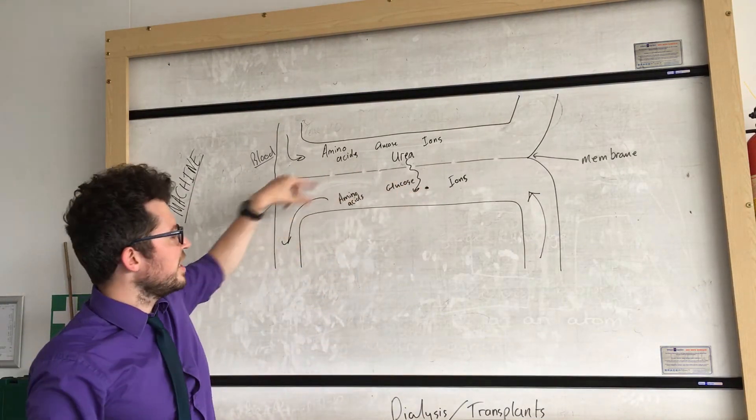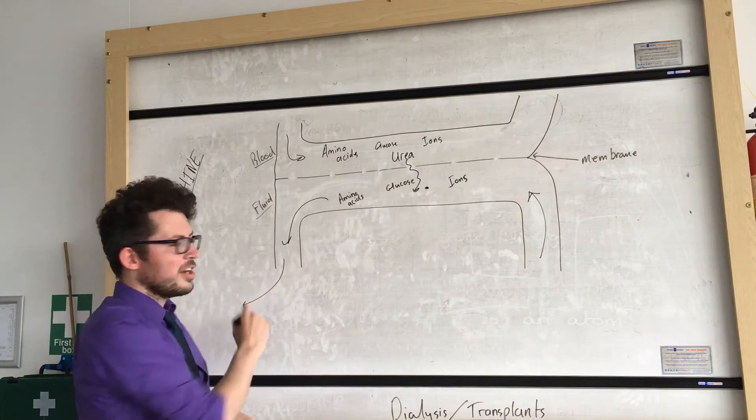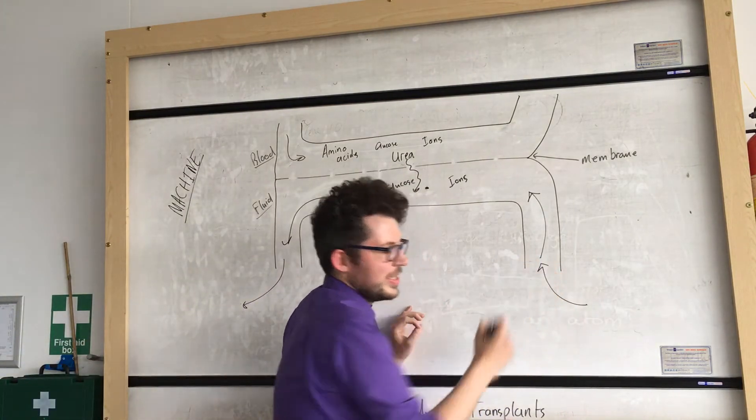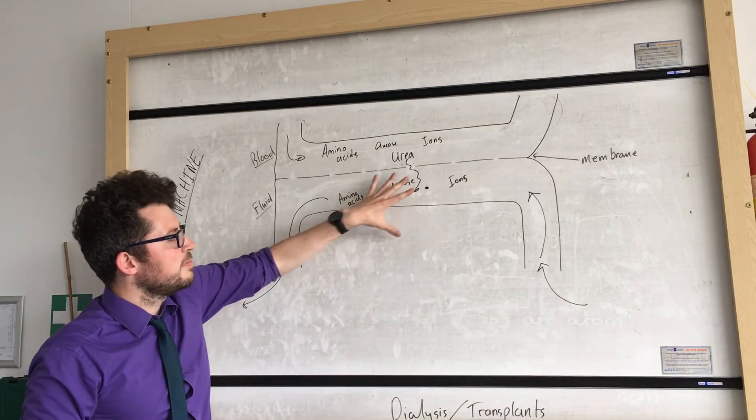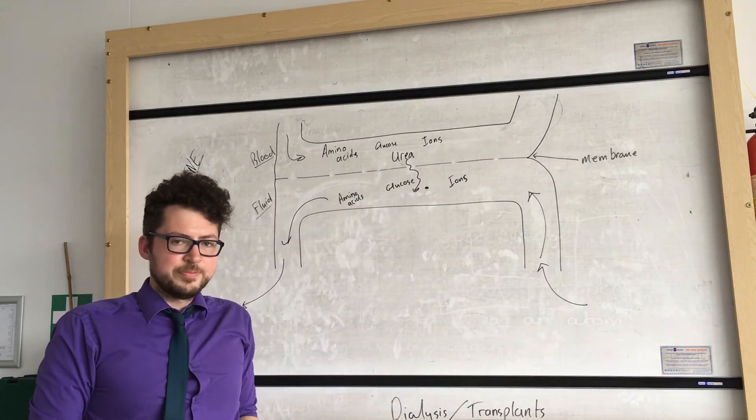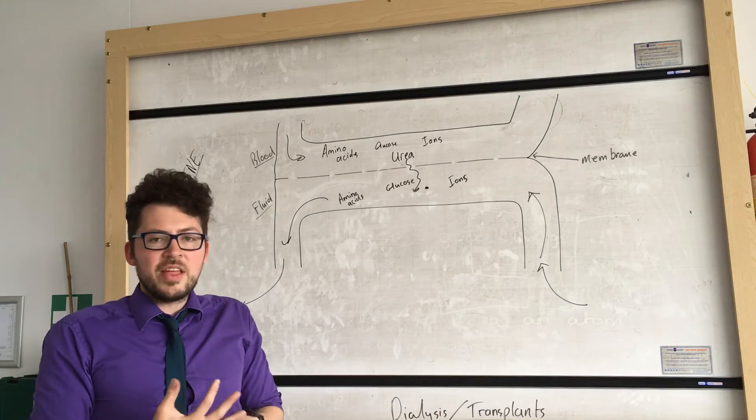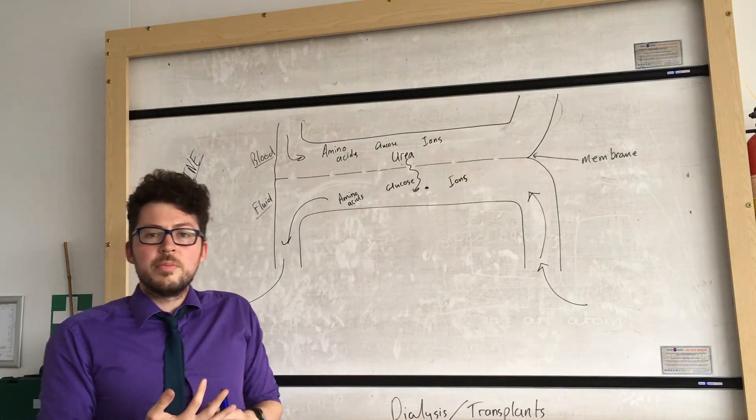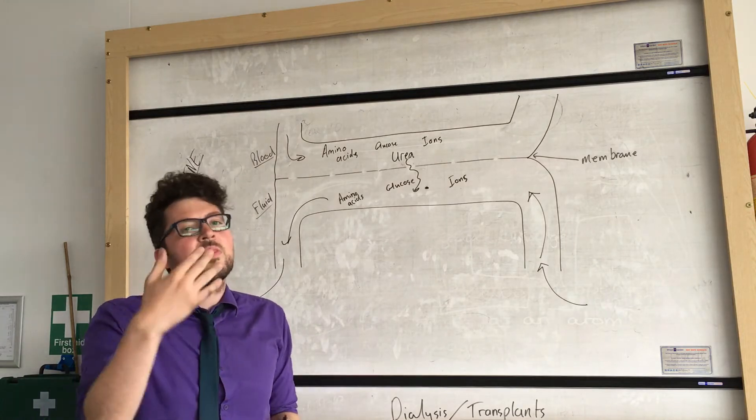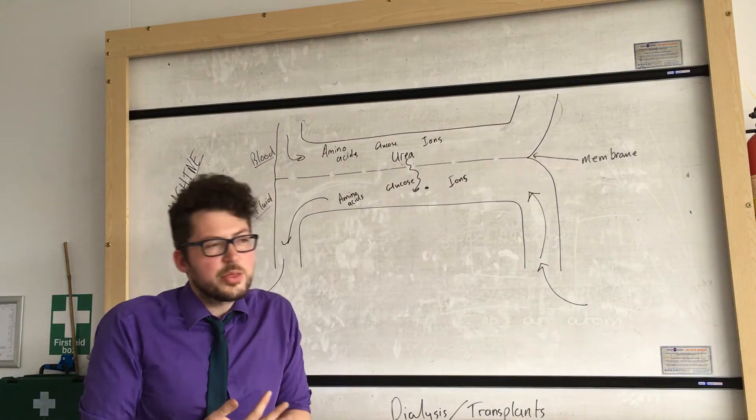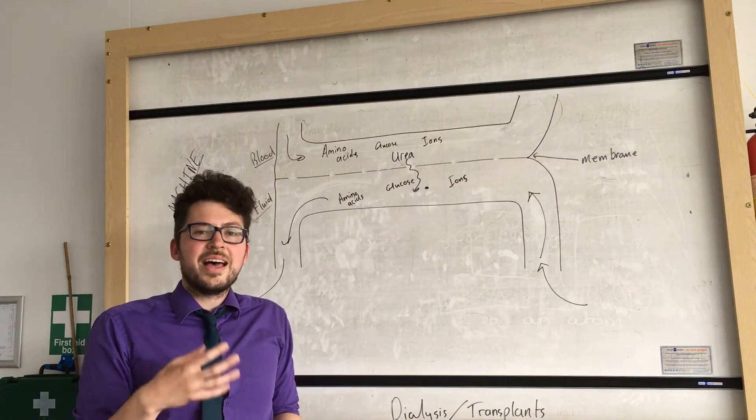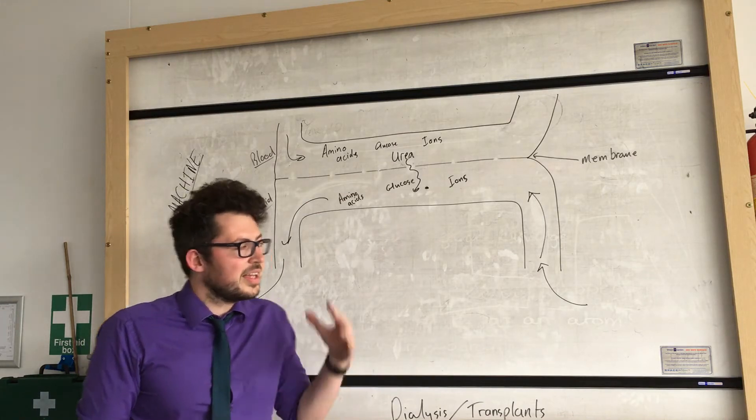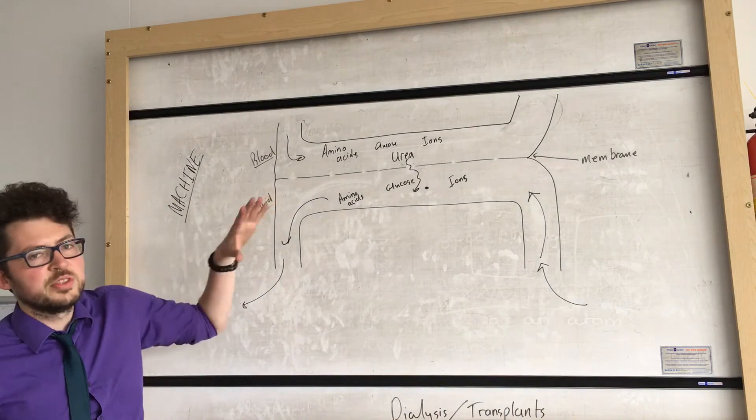So this fluid would be carried away and removed and would be continually replaced by new dialysis fluid. This is because we don't want urea to build up in our fluid. Now this allows a person to have their blood filtered and cleaned and it is helpful because it means that they don't have to do it that often. So it happens roughly three times every week in hospital and it takes about four hours or so each time. So that is dialysis and it removes urea from the blood.